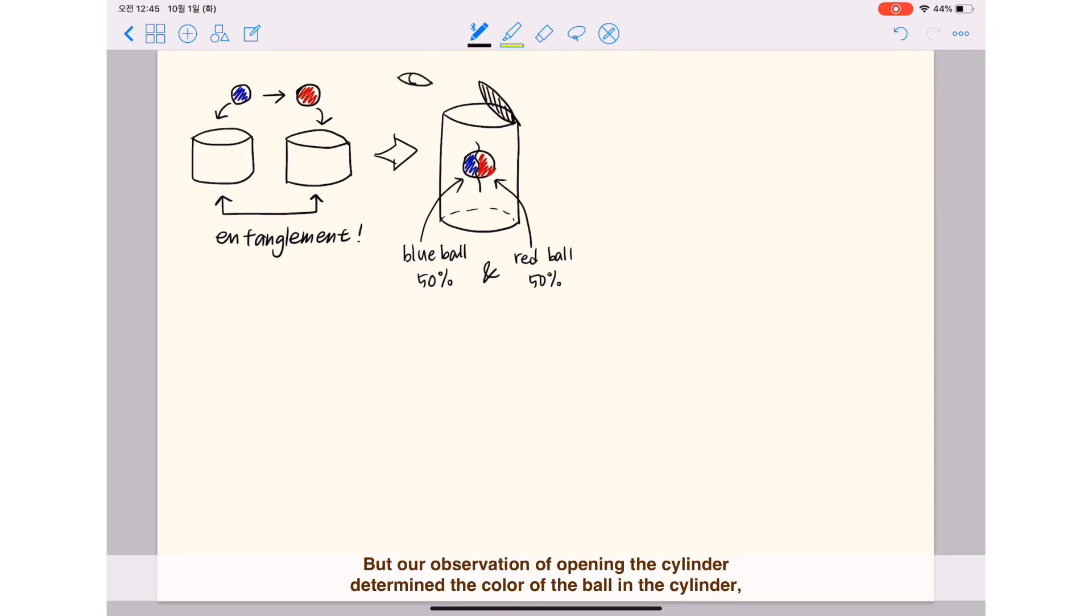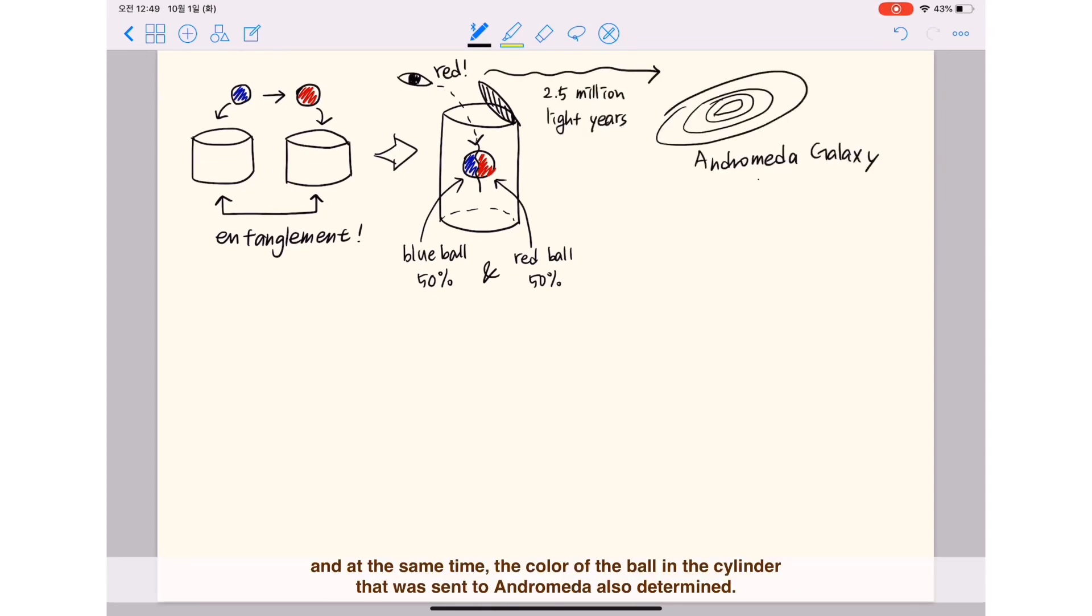But our observation of opening the cylinder determined the color of the ball in the cylinder, and at the same time the color of the ball in the cylinder that was sent to Andromeda also determined. Information from distance places about 2.5 million light-years passed in seconds.